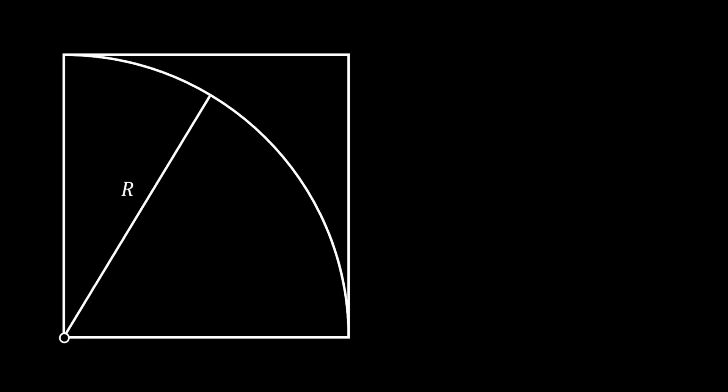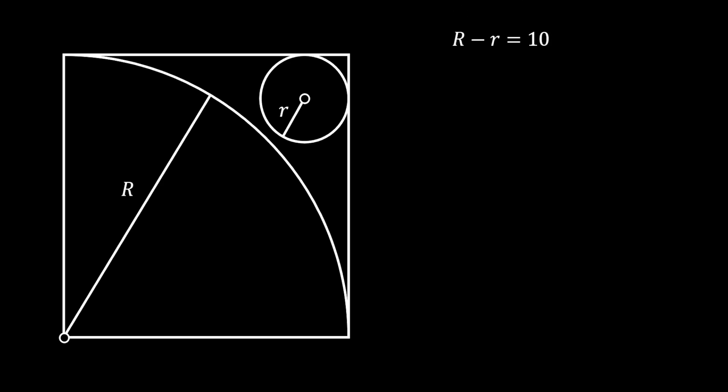Let's start with the square, and in it we will inscribe the quarter circle with the radius of capital R. Then at the upper right corner of the square we will construct a circle with the radius of small r. Let's say that the difference between those two radii is equal to 10.